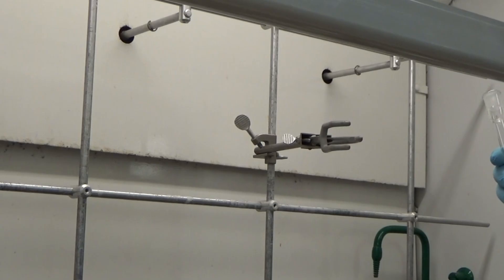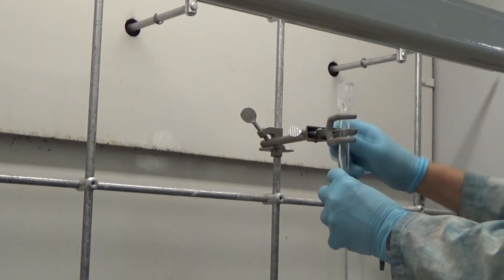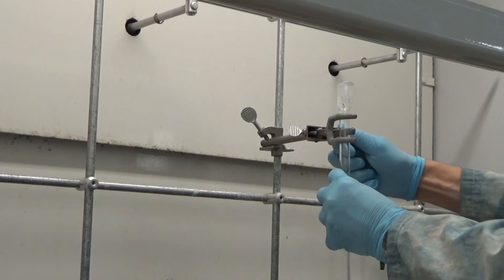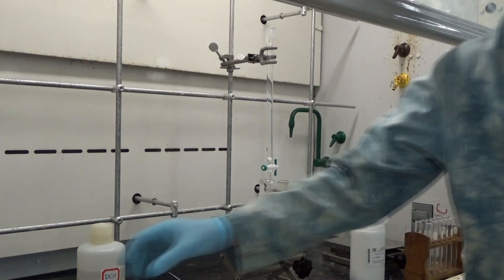For the rest of our column packing exercise here, it's better to have the column clamped straight up and down, so I'm going to return it to the three-fingered clamp that was holding it originally. At this point, I'm ready to add a little bit of chromatography sand.